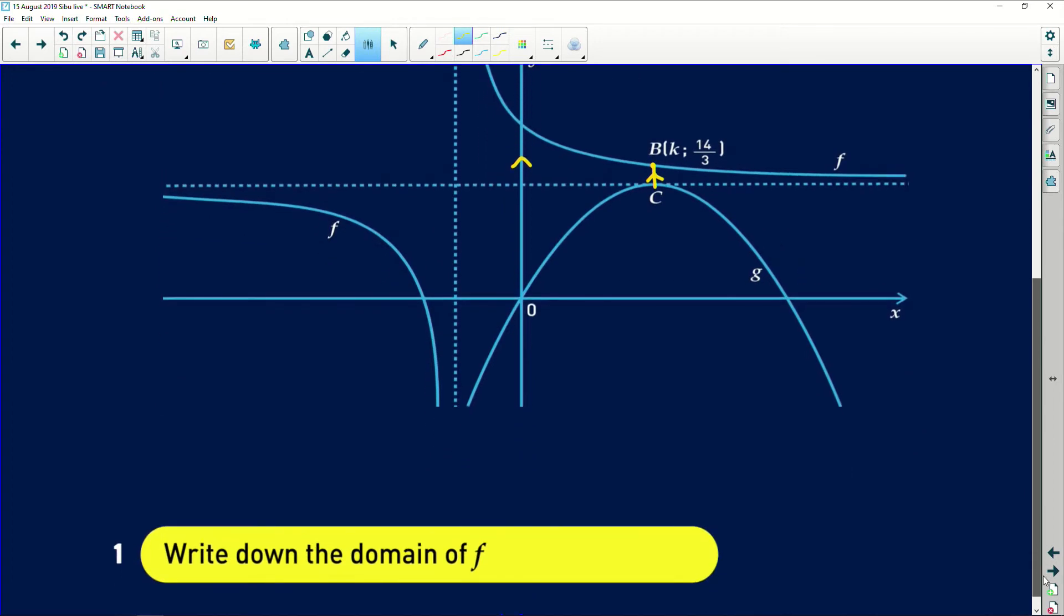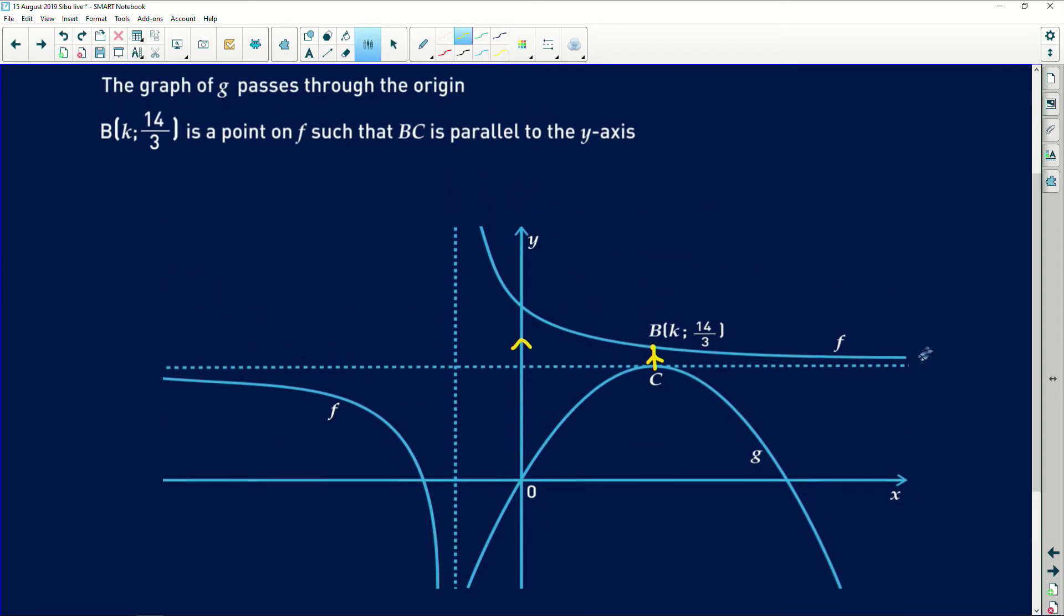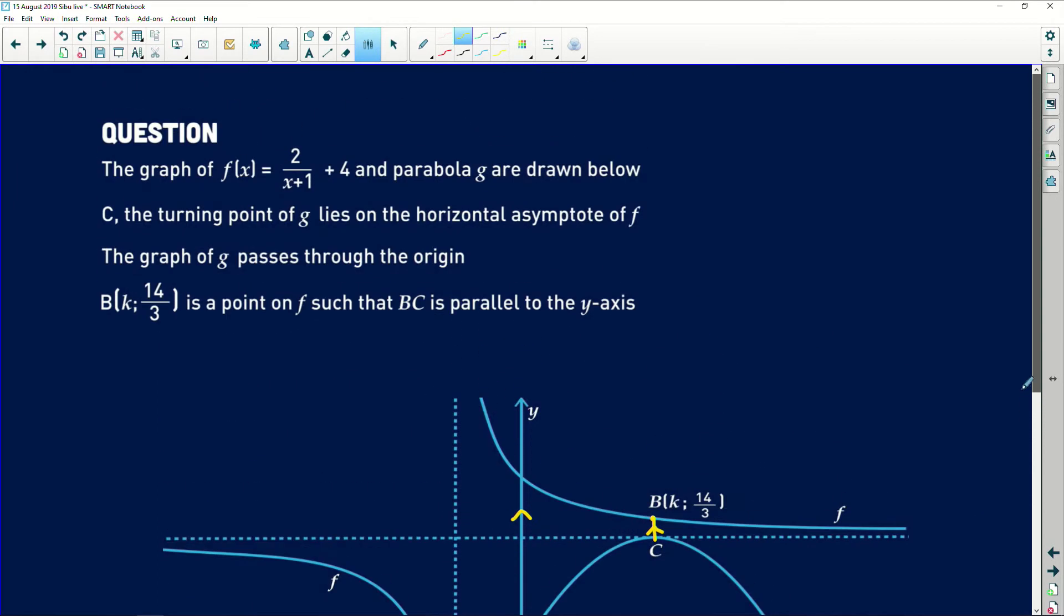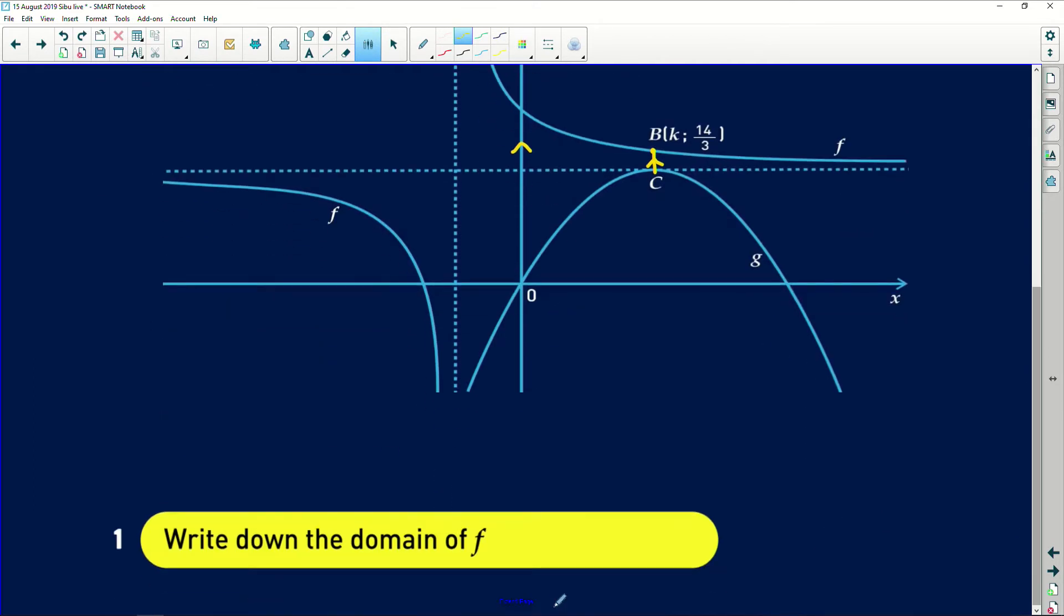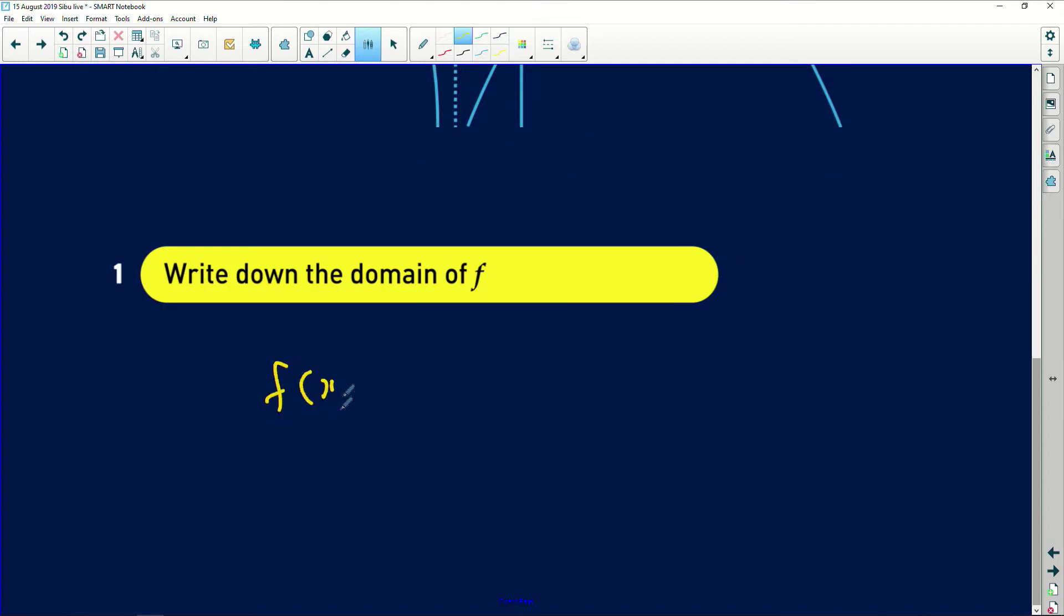The first question asks us to write down the domain of the graph of f. So who is the graph of f? The graph of f is the hyperbolic function. And what is the equation of the hyperbola? There you have it. It's f(x) = 2/(x+1) + 4.